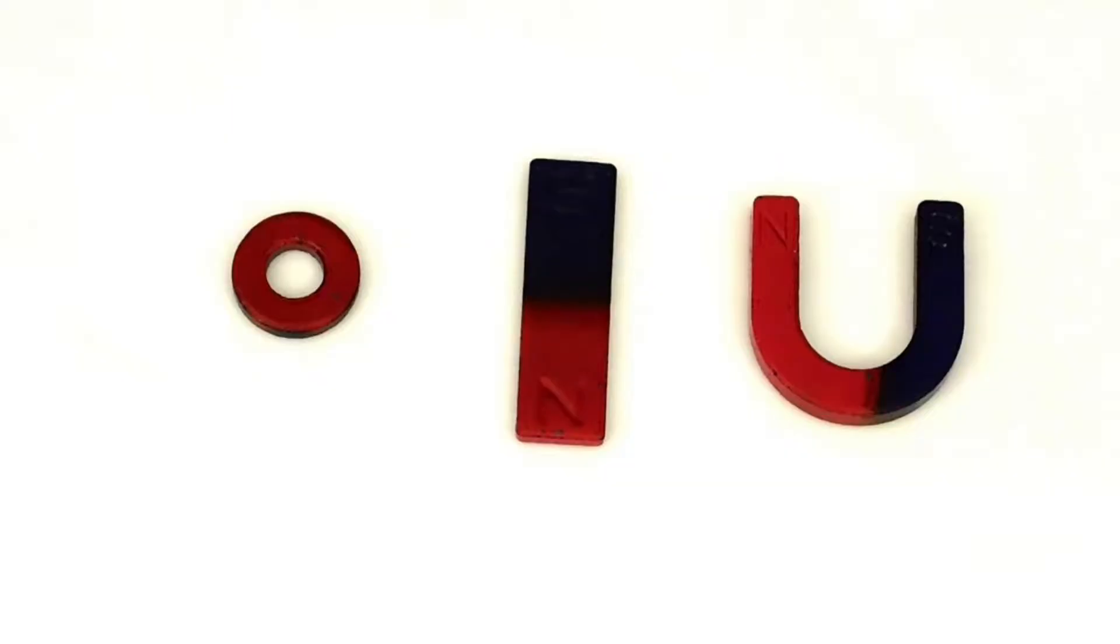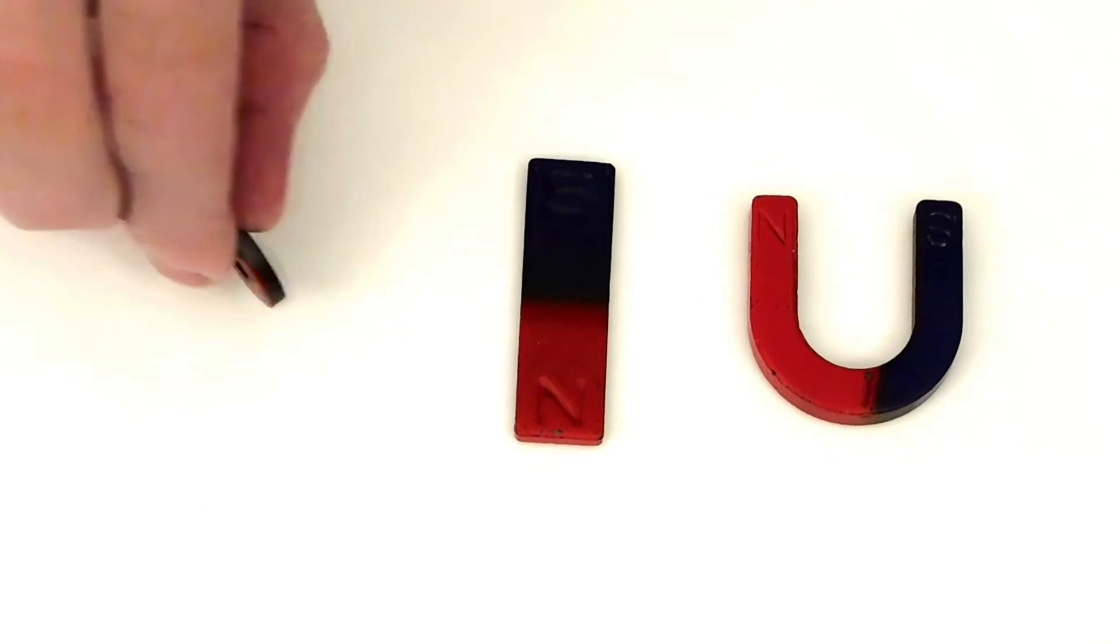These are examples of permanent magnets, regardless of the shape, size, or the material they're made with. All magnets have a north pole and a south pole. If the magnet has paint or tape, then the north pole is typically painted red.